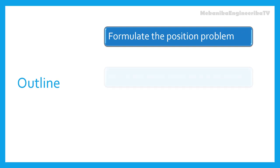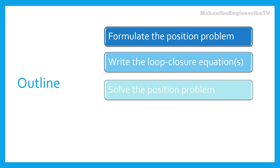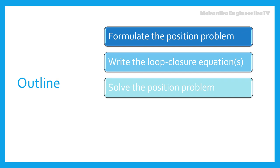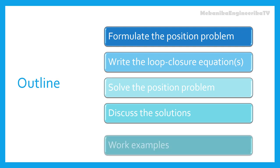In a second step, we are going to establish the loop closure equations required to solve the position problem. Loop closure equations are vector equations written in terms of the position vectors of the links in a loop. Thirdly, we are going to give techniques to solve the established loop closure equations. The loop closure equations will be written in terms of trigonometric functions, so solving the position problem will be based on the use of some trigonometric identities. In a fourth step, we will discuss the obtained solutions. At last, we are going to work some examples.